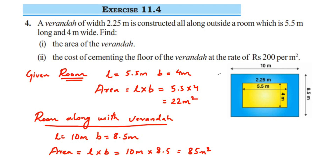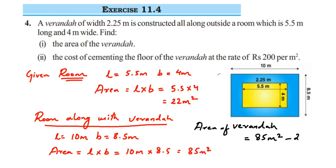We subtract the area of the room (22 meter square) from the total area (85 meter square): 85 − 22 = 63 meter square. So 63 meter square is the area of the veranda. That gives us the answer to the first question.